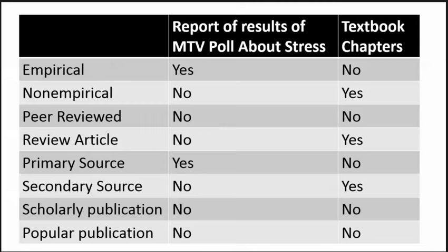Textbooks, on the other hand, can have things in common with both scholarly sources and popular publications, but they're different in many ways. Each textbook chapter can be considered a non-empirical review article. Their purpose is to summarize what we know rather than present new information. They do not go through the same peer-review process as an article, but are often reviewed by scholars with knowledge of the content.